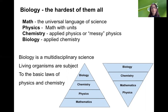Math, if you look in the pyramid to the left, is the foundation of all sciences. Then comes physics. Chemistry is built on the foundation of physics and biology is built on the foundation of chemistry. Therefore math, physics, and chemistry are all the foundations of biology. The pyramid to the right represents the fact that biology is the most complex of all the sciences because it is built on the foundation of the other two.